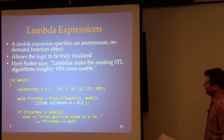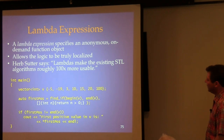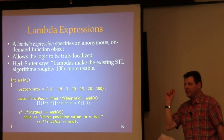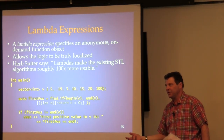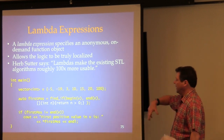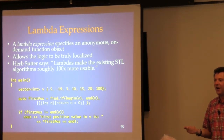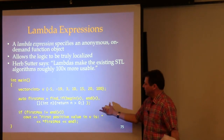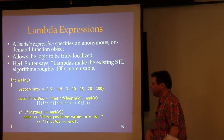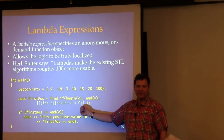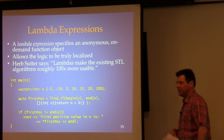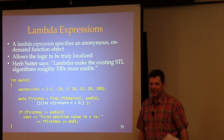New C++ introduces lambda expressions. A lambda expression specifies an anonymous on-demand function object. Every lambda expression creates a class with a unique type name you don't get to know, which has an overloaded function call operator that does what your lambda says to do. So you can take this functionality and put it right where you use it. It's generating a whole class and instantiating it, but it's inline and will be very efficient.